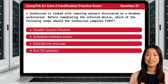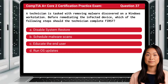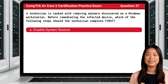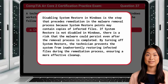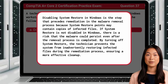Question 37. A technician is tasked with removing malware discovered on a Windows workstation. Before remediating the infected device, which of the following steps should the technician complete first? The answer is A: Disable system restore. Disabling system restore in Windows is the step that precedes remediation in the malware removal process because system restore points may contain copies of infected files. If system restore is not disabled, there is a risk that the malware could persist even after the removal process is completed. By turning off system restore, the technician prevents the system from inadvertently restoring infected files during the remediation process, ensuring a more effective cleanup.